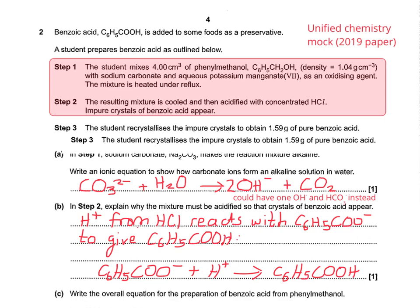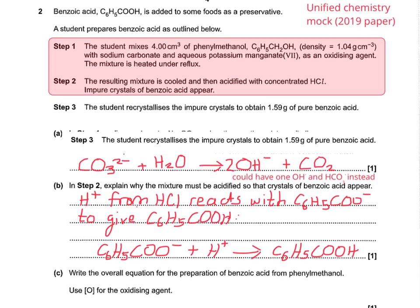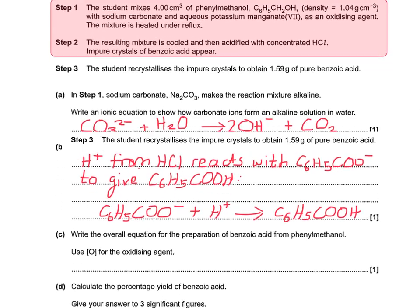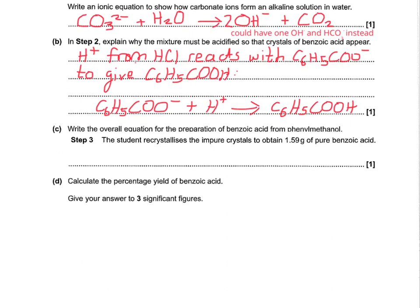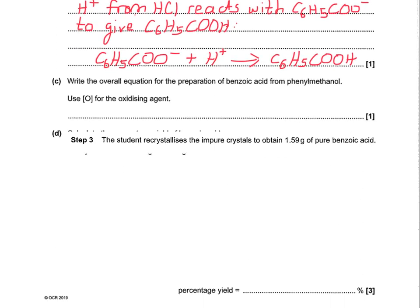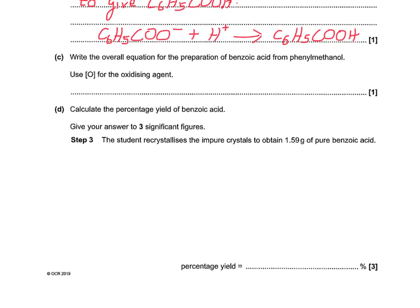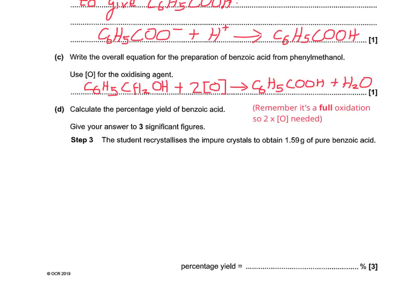Let's move on to the next part. It says: write the overall equation for the preparation of benzoic acid from phenylmethanol. Remembering, as we said earlier, it's a full oxidation, so two O's in square brackets — [O] — is needed.